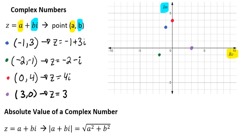Now, to find the absolute value of a complex number, we're going to have, again, our z equals a plus bi, and that's going to translate to the absolute value of a plus bi, which is the square root of a squared plus b squared.